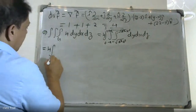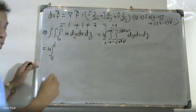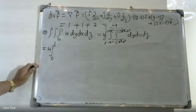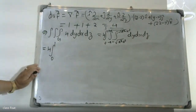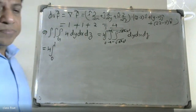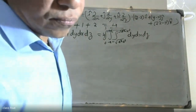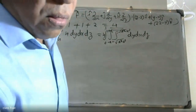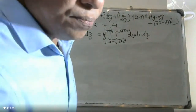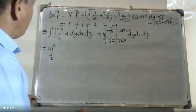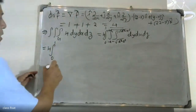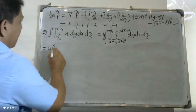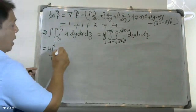The z limit runs from 0 to 1, the x limit runs from minus s to plus s, and the y limit runs from minus root of (s squared minus x squared) to plus root of (s squared minus x squared).